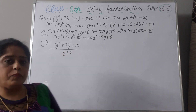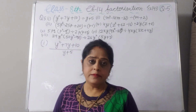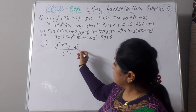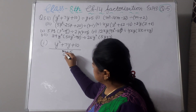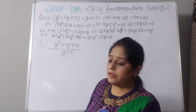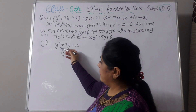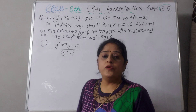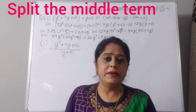Here, as you have seen in the previous sum, we can cancel the factor, but here we can't cancel y plus 5 directly. So, think about how we factorize this — we will use split the middle term.